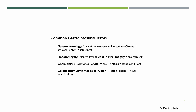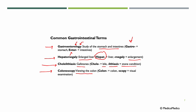Common gastrointestinal terms: gastroenterology means the study of the stomach and intestines — 'gastro' is stomach, 'enter' is intestines, and we add '-logy.' Hepatomegaly means enlarged liver — 'hepato' meaning liver, 'megaly' means enlargement. Cholelithiasis means gallstones — 'chola' meaning bile, 'lithiasis' meaning stone condition. Colonoscopy means viewing the colon — 'colon' is just colon, and '-scopy' means visual examination.